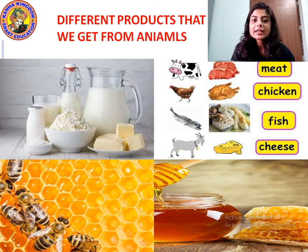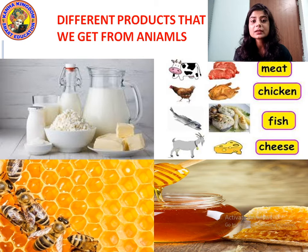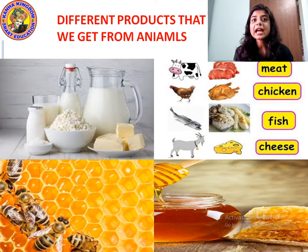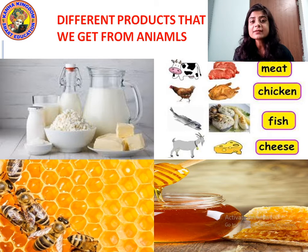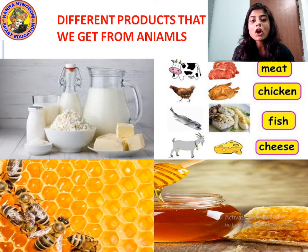Students, see the pictures — these are the different products we get from animals. Milk products like butter, ghee, paneer, milk, curd, and ice cream. We get meat from chicken and fish. This bee gives us honey. The home of a bee is called a beehive, where bees live and make honey for us.